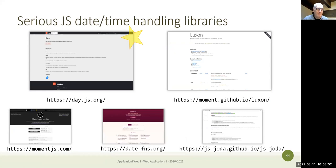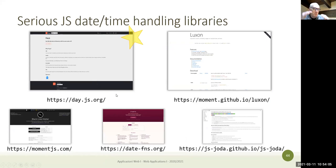The most frequently used date libraries are day.js, Luxon, and Moment. We'll be using day.js as an example — it's very small and widely used.